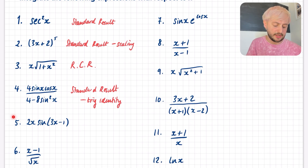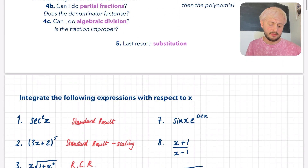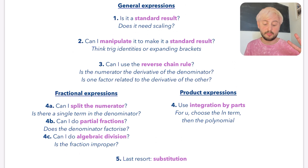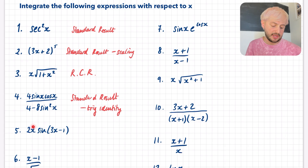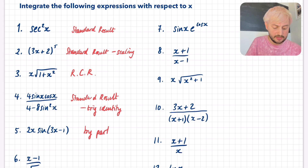Question 5: it doesn't look like a standard result, and it doesn't look like the reverse chain rule because 2x is not the derivative of this kind of expression. Moving on in the flow diagram, it's not a fractional expression. It is a product expression because we've got two things being multiplied. So I think we're going to use integration by parts and we're going to choose the polynomial part — the x part — as U.